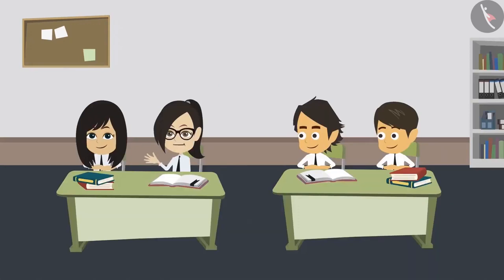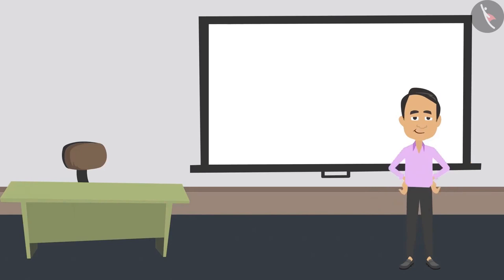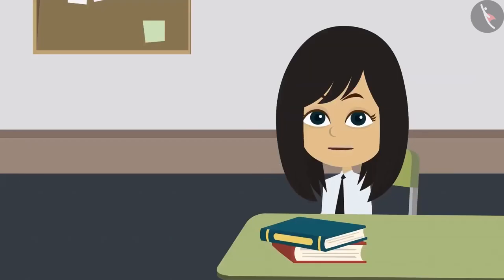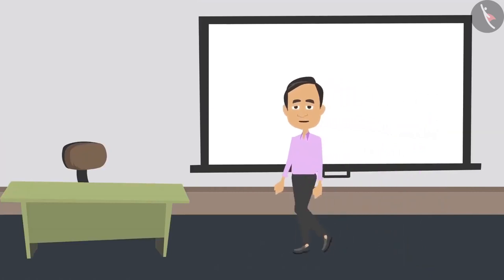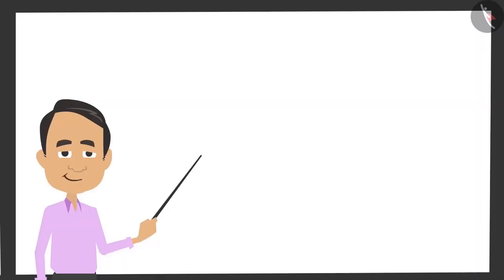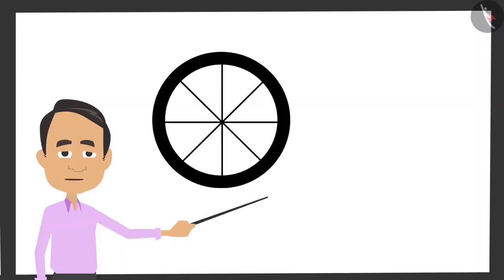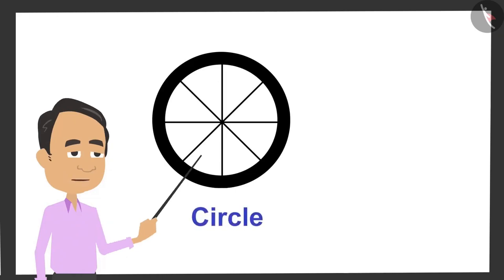The teacher says that before measuring any circle, you have to understand what a circle is. A student suggests that a round figure is called a circle, but the teacher asks what a round figure really means. He uses the wheel of a bicycle as an example — it is round, that is, in the shape of a circle.